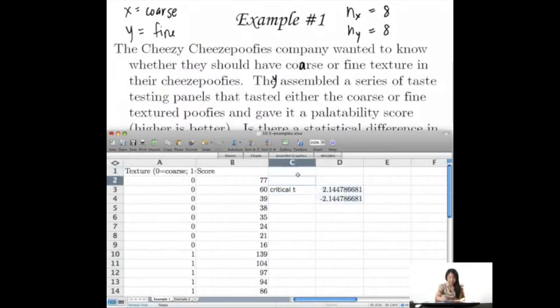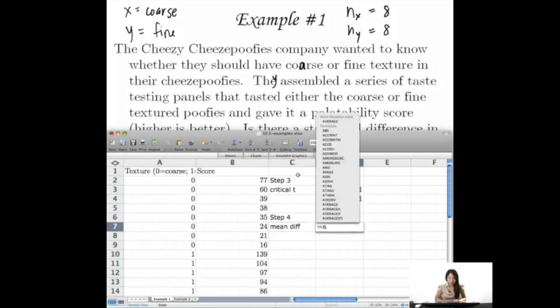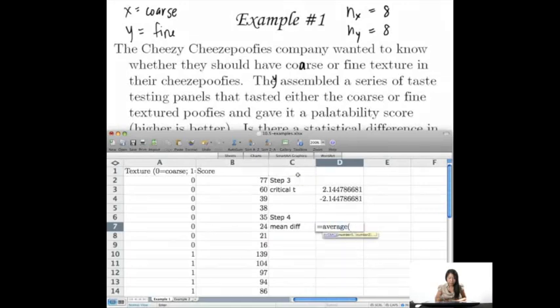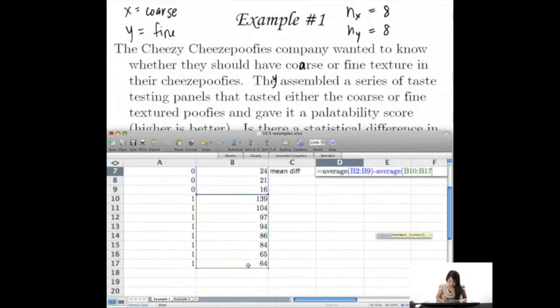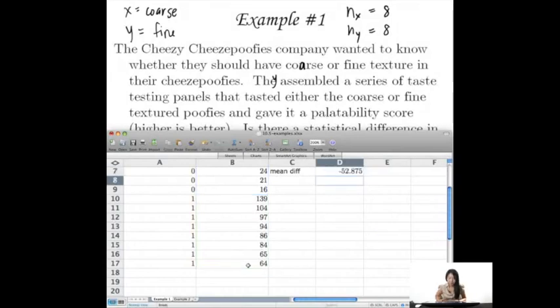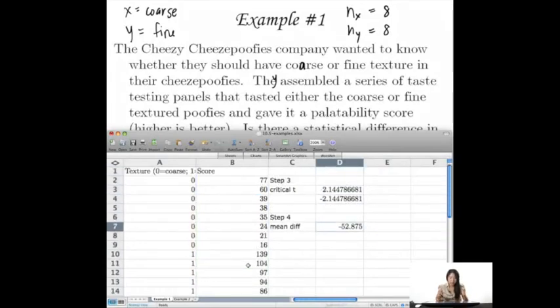So let's go ahead and do that. So here I'm just going to write this as, we just started from step three. Step three. And step four is really the mean difference. And that's just the average of these guys. The average of these guys minus the average of these guys.